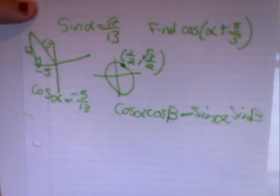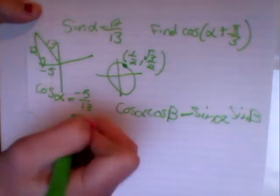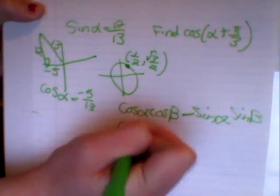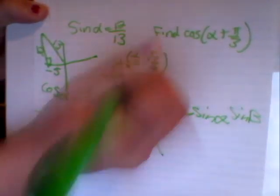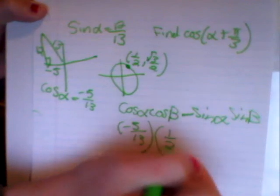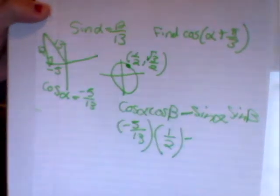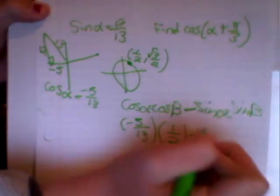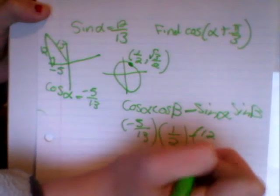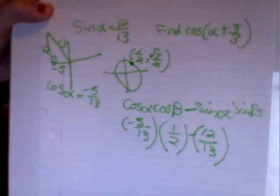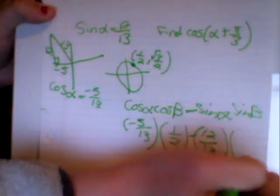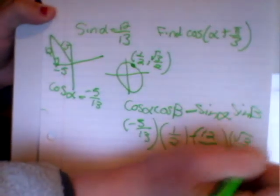That's going to be, we found out that cosine alpha is negative 5 over 13. And cosine beta is 1 half, minus sine alpha, they gave us, is 12 over 13. And sine beta we found out to be the square root of 3 over 2.